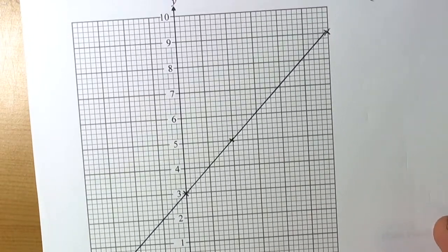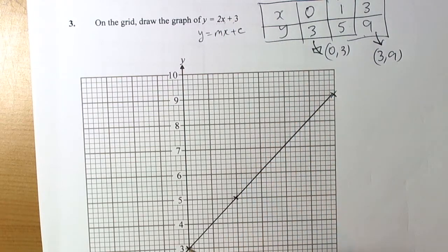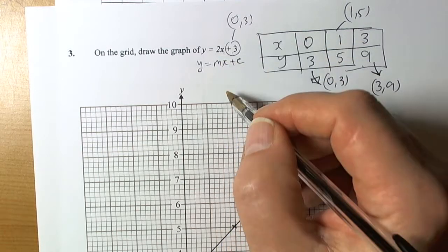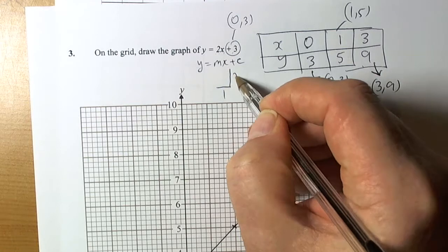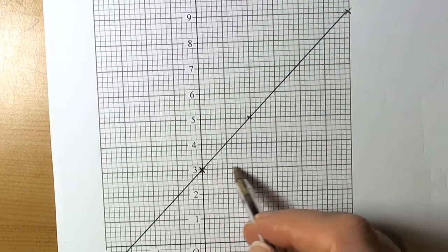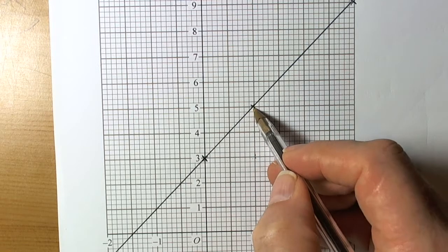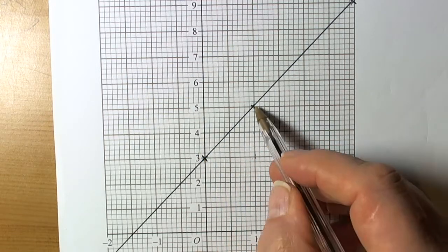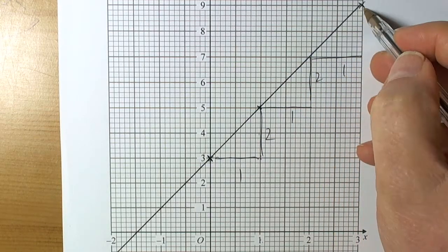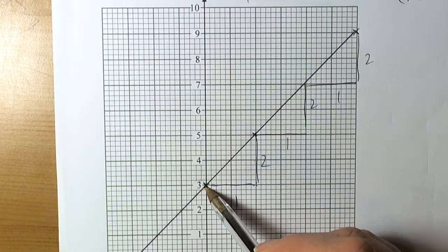The alternative method: from y equals mx plus c, c is the intercept when x is 0, so we plot (0, 3) straight away. The gradient of 2 tells me for every 1 on the scale I go across, I go up 2. So starting at the intercept, go 1 across on the scale then 2 up on the y-axis — repeat this to get additional points, then draw the straight line.